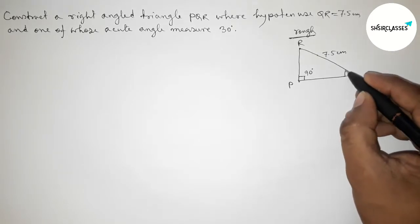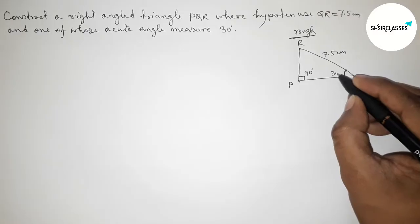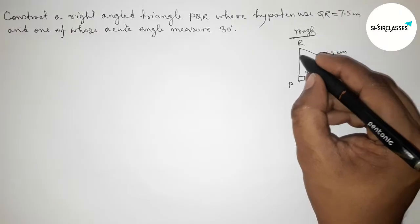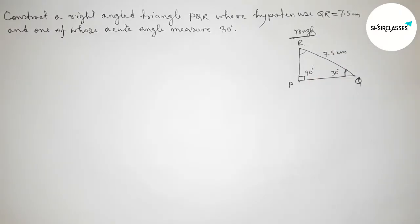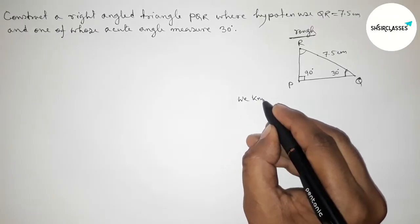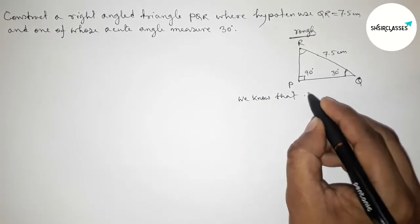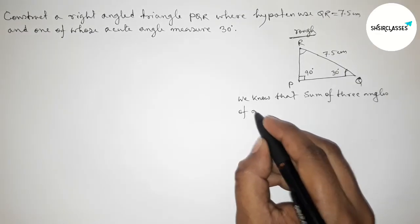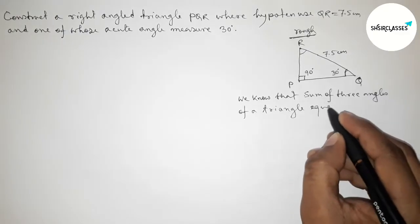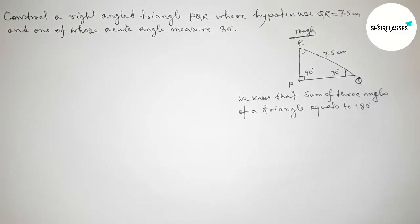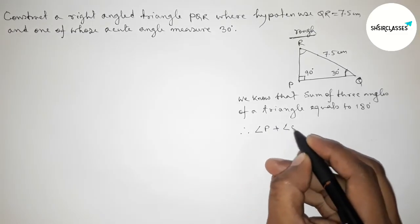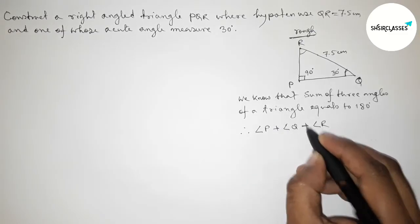We can take angle Q as 30 degrees or angle R as 30 degrees. I am going to take angle Q equals 30 degrees. Now I will find angle R using an important theorem: the sum of the three angles of a triangle equals 180 degrees.